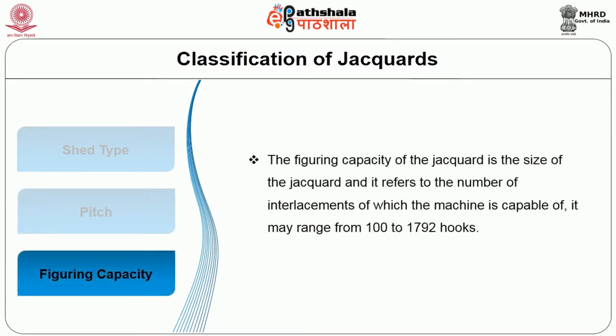The figuring capacity of the jacquard is the size of the jacquard and it refers to the number of interlacements of which the machine is capable. It may range from 100 to 1792 hooks.